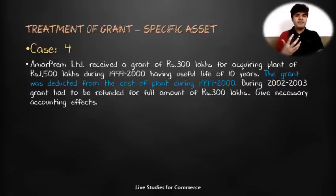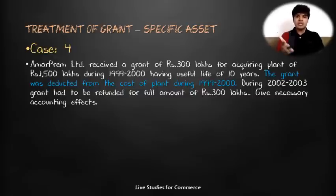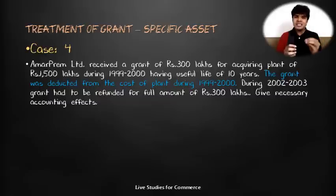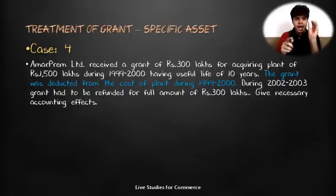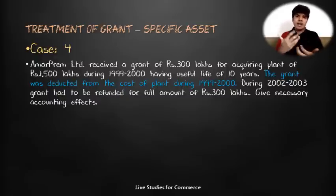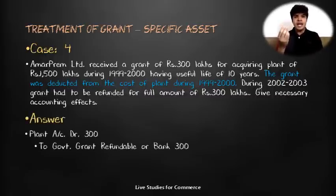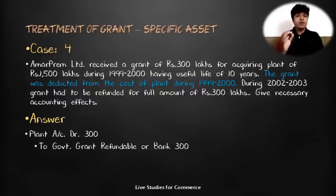In the same Amar Prem case, if instead the grant was deducted from the cost of the plant in 1999-2000, then on refund the asset value must be increased. The plant was originally ₹1,500 lakh but recorded at ₹1,200 lakh after deducting the ₹300 lakh grant. On refund, the entry is: Plant Account Dr. ₹300 lakhs, To Government Grant Refundable / Bank ₹300 lakhs, increasing the asset value accordingly.